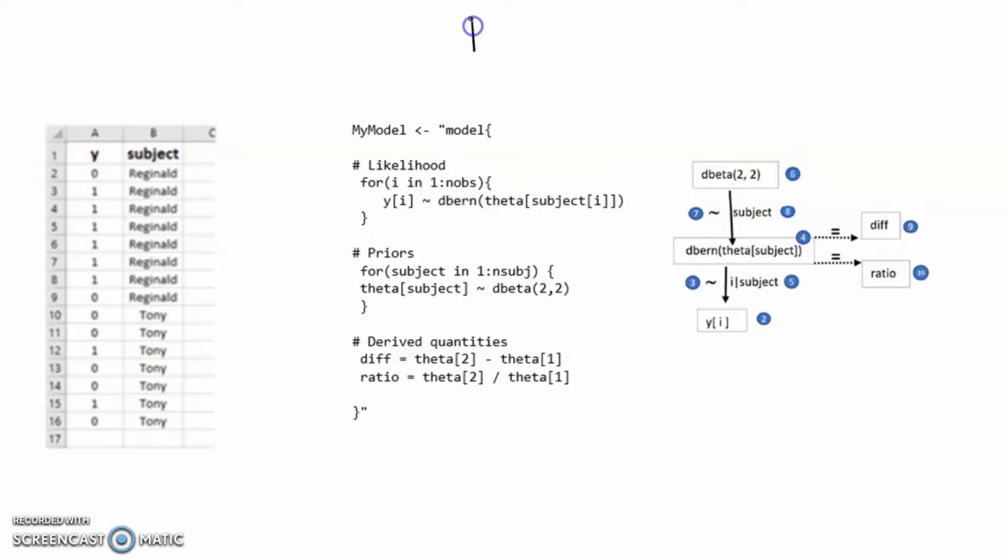In this video, we're continuing on with the saga of Reginald and Tony and their two coins. Our goal is to estimate theta 1, the Bernoulli parameter for Reginald's coin, and theta 2, the Bernoulli parameter for Tony's coin. Here's what our data consists of: our initial data frame with our two subjects, Reginald and Tony. Our data consists of a series of zeros and ones, where one means that a head was obtained, zero means that a tail was obtained.